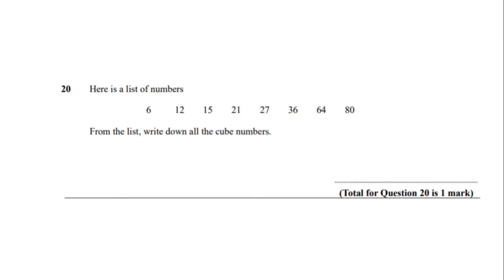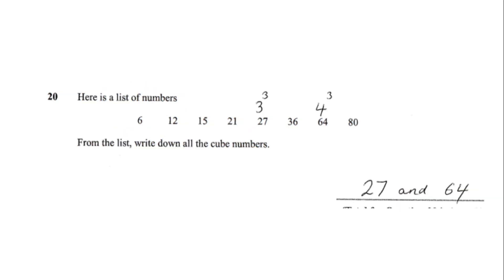Lastly, here is a list of numbers: 6, 12, 15, 21, 27, 36, 64 and 80. From this list, write down all the cube numbers. You should have got 27 and 64. Thank you everyone for listening to my video. Bye.